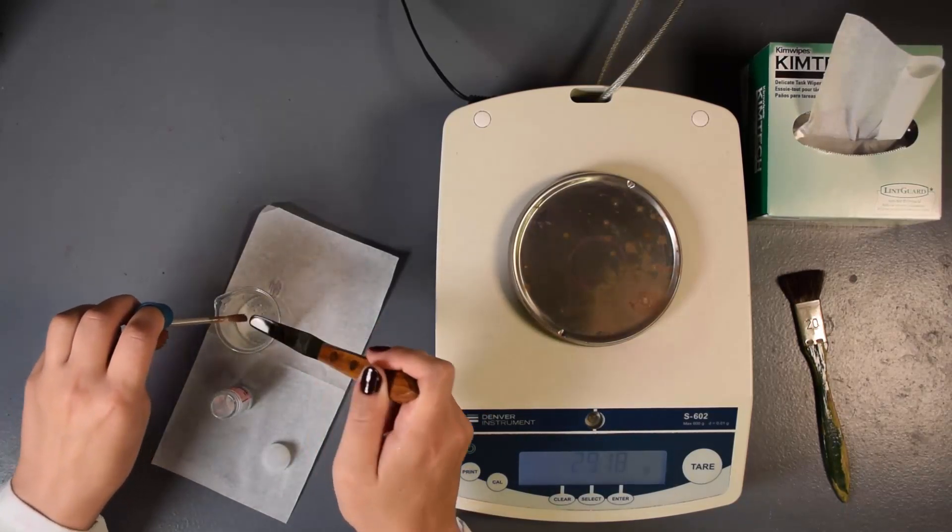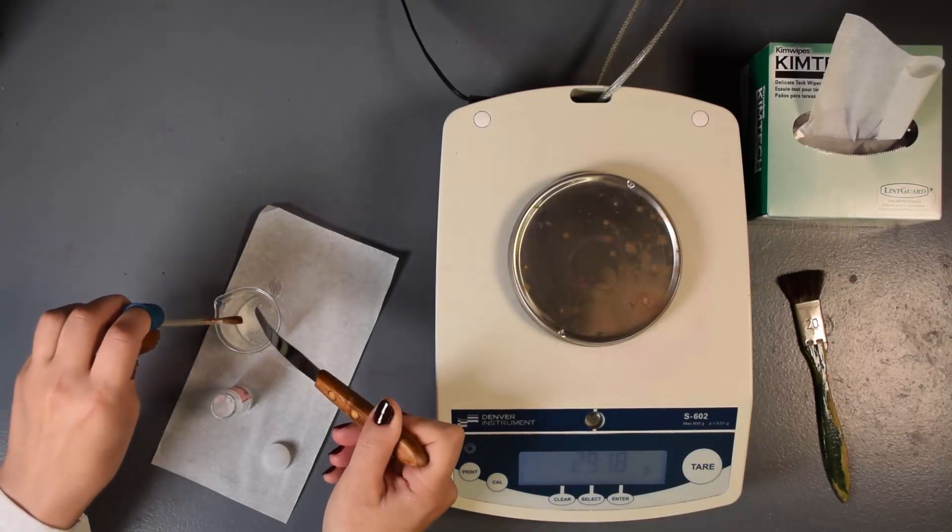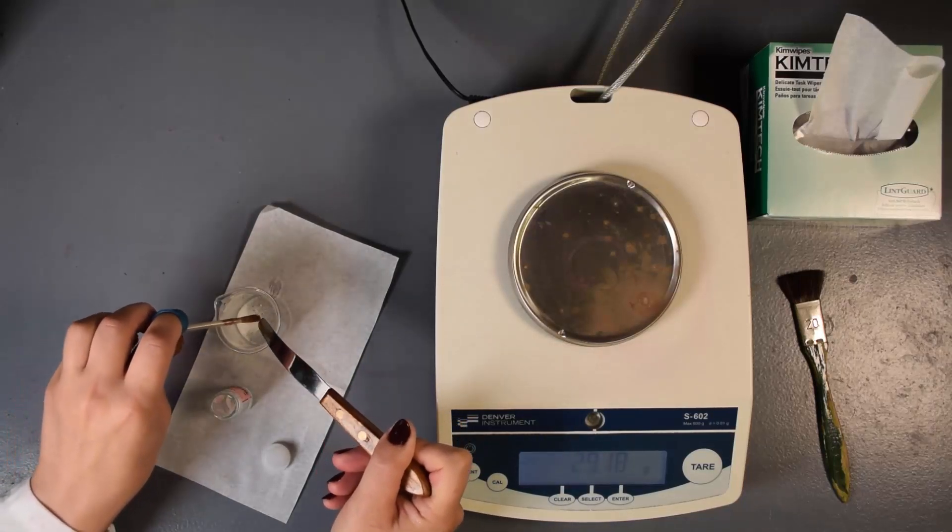Notice how both sides of the spatula are gently brushed into the beaker, followed by cleaning any compound from the camel hair brush into the beaker.